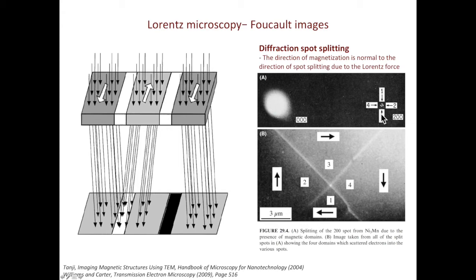This tells us there are 4 magnetic domains in the selected area for diffraction. If we use a super small objective aperture to select only one of them, then the corresponding magnetic domain will show up in the dark field image. This mode of imaging is called Foucault imaging.